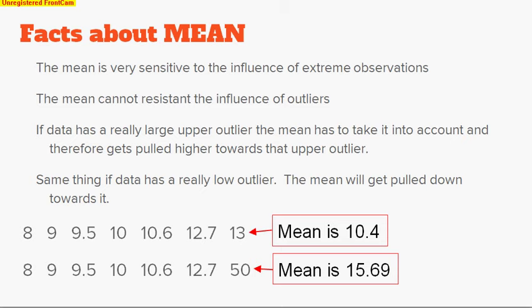Here's a couple facts about the mean. The mean is very sensitive to the influence of extreme observations. The mean cannot be resistant to the influence of outliers. If the data has a large upper outlier, the mean has to take it into account and therefore gets pulled higher towards that upper outlier. Same thing if data has a really low outlier—the mean will get pulled down towards it.